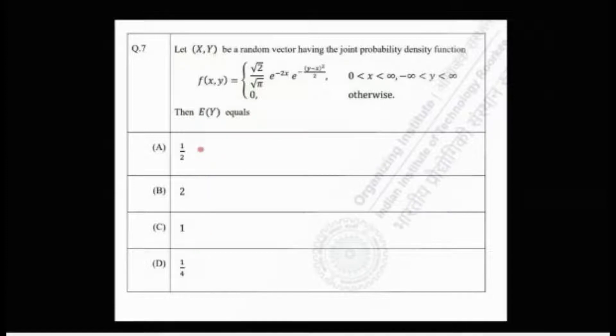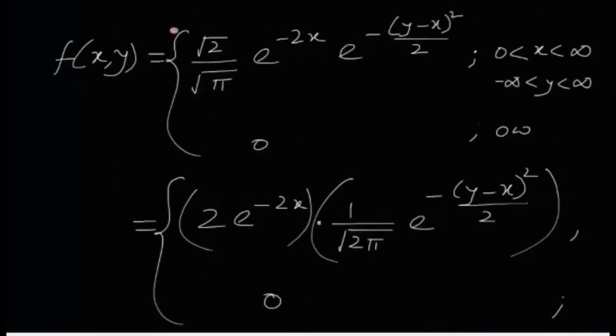The problem is pretty straightforward. It says that (X,Y) is a random vector with the joint PDF as this and we are asked to find the expectation of Y. But if you notice, obviously this PDF doesn't look like the PDF of a standard distribution. But if you look closely, this PDF can be written in a very nice manner.